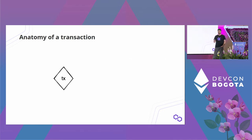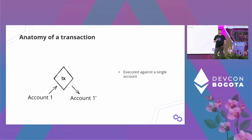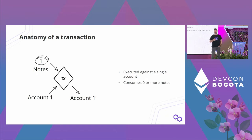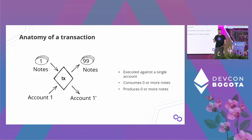A transaction in the context of Miden always involves only one account — the state of that account gets updated during the transaction. A transaction can consume zero or more notes, and can produce zero or more notes. For example, one transaction produces a note and another transaction consumes that note.